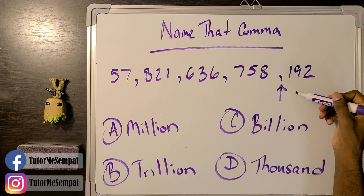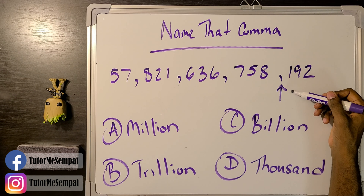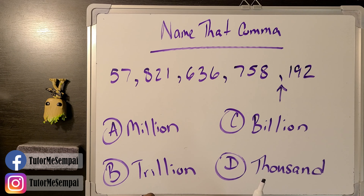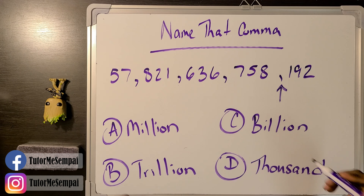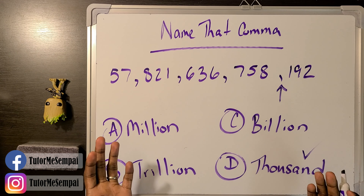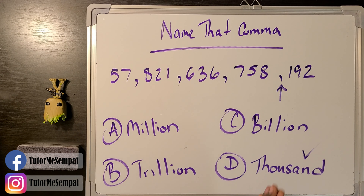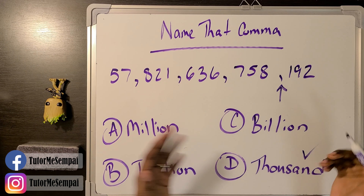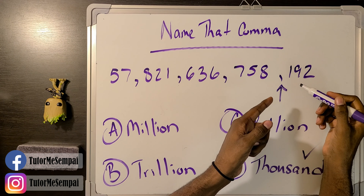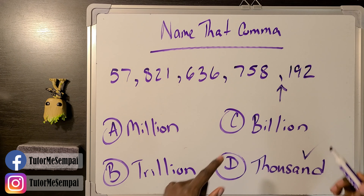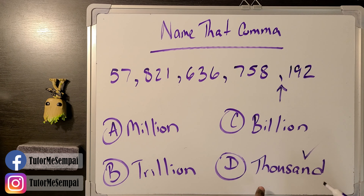Let's do our next one. What's going to be the name of this comma? Give yourself a little bit of time to figure that one out as well. If you said D, thousand, you are correct. This is the very first comma you're going to run into and it's the thousand comma. Good job.